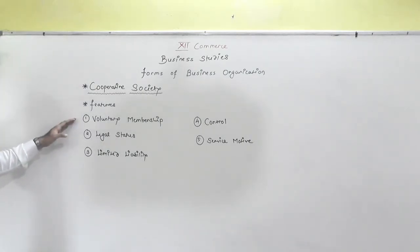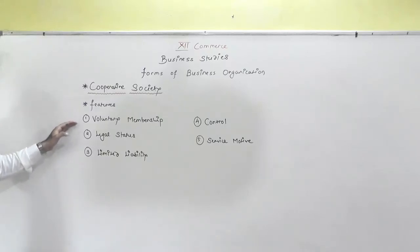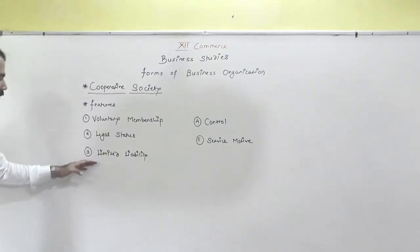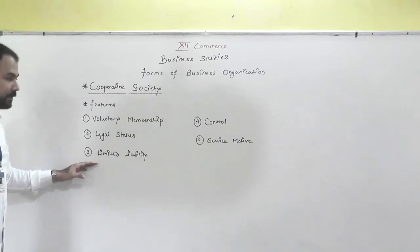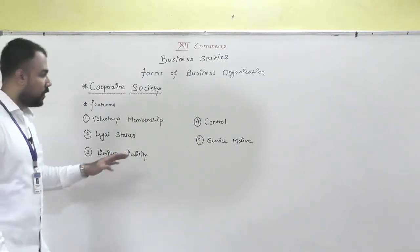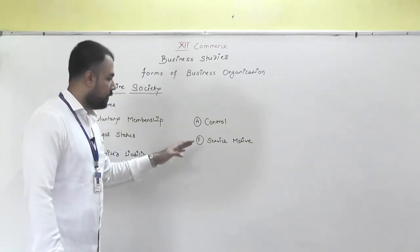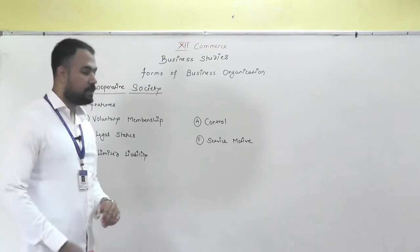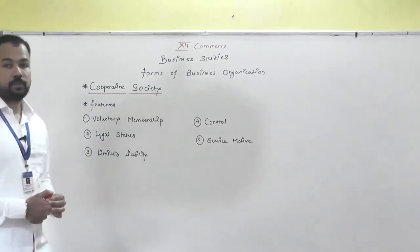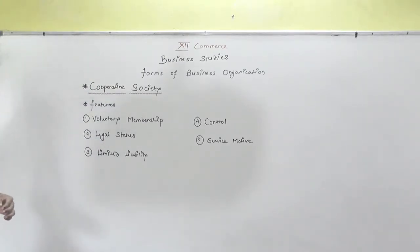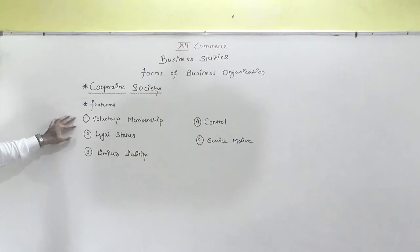Now we will see the features in detail. The first feature is voluntary membership. The second feature is legal status. The third feature is limited liability. The fourth feature is control. And the fifth feature is service motive.